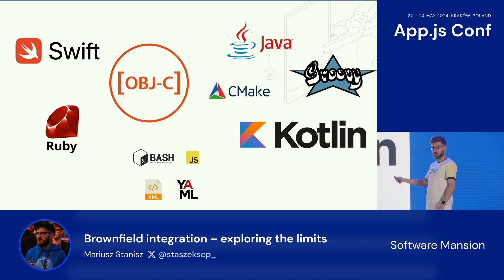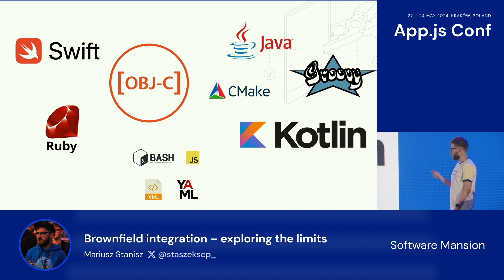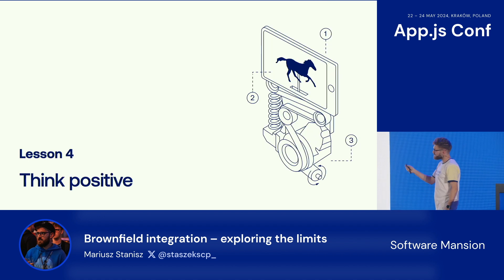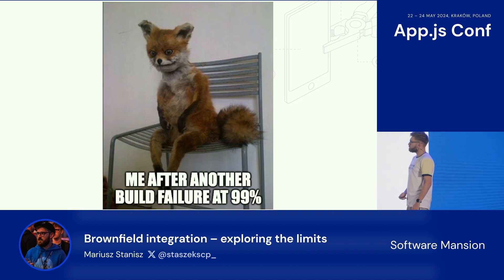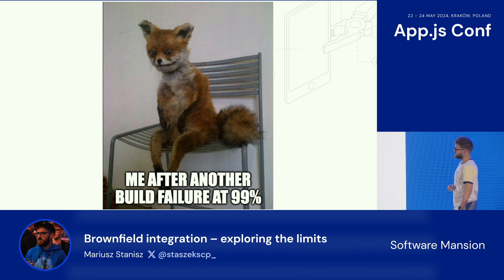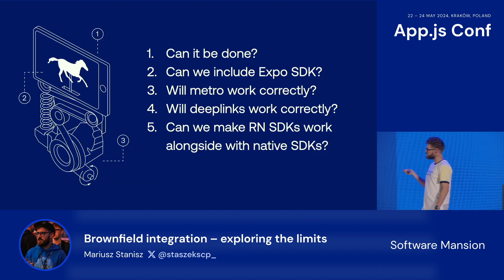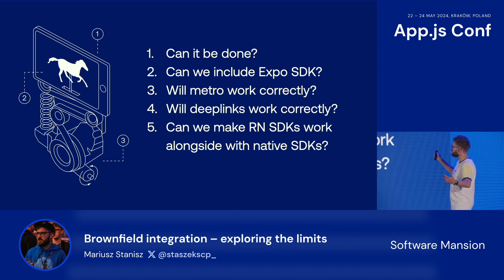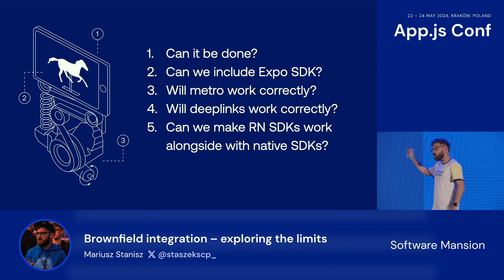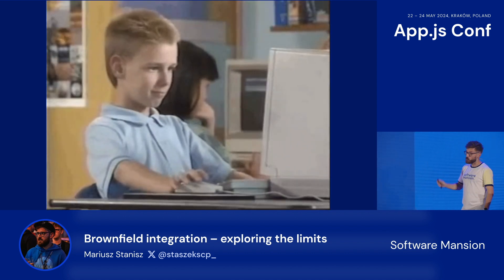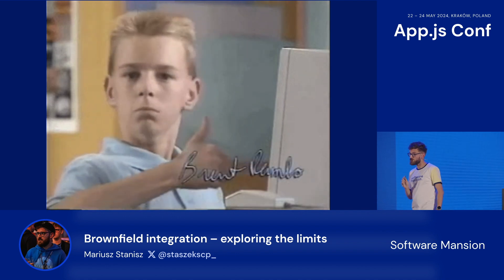Lesson number four: think positive. After multiple build failures — and I worked on this for a couple of months — I kept asking myself: can it be done? Can we include Expo SDK? Will Metro or deep links work correctly? I doubted it. However, the answer to all those questions was yes. It actually worked quite well.